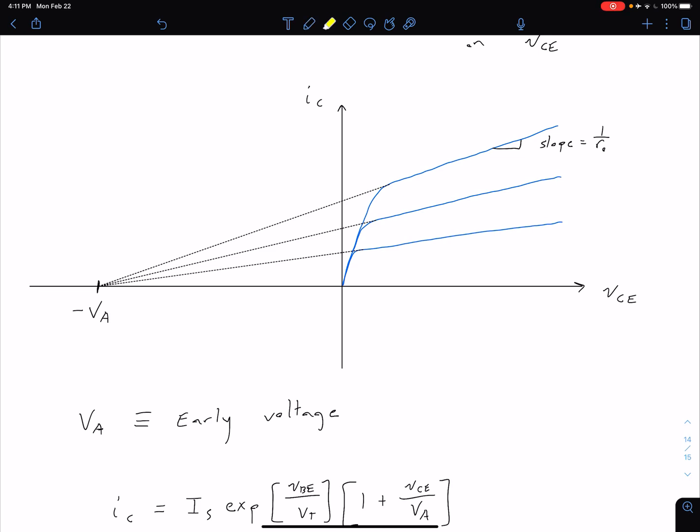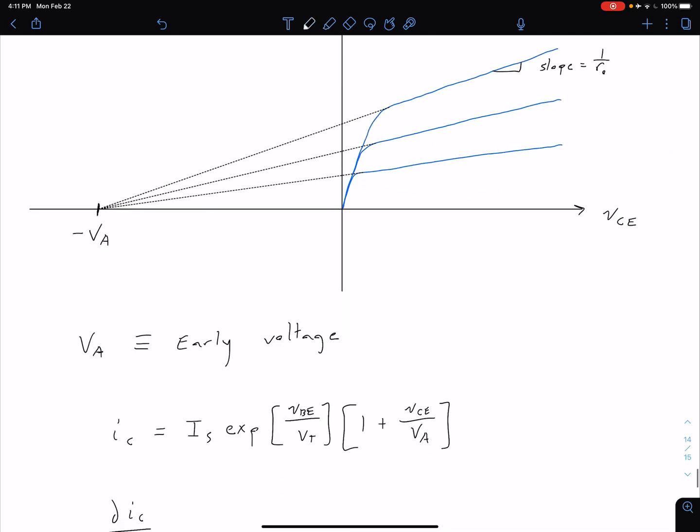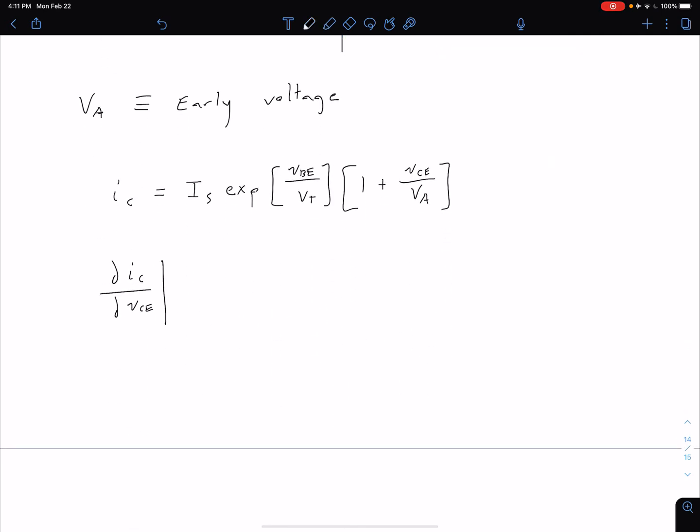In other words we have to be on one of these particular curves because we notice that the different curves have different slopes. So we're going to limit it and say this partial derivative for some constant VBE.